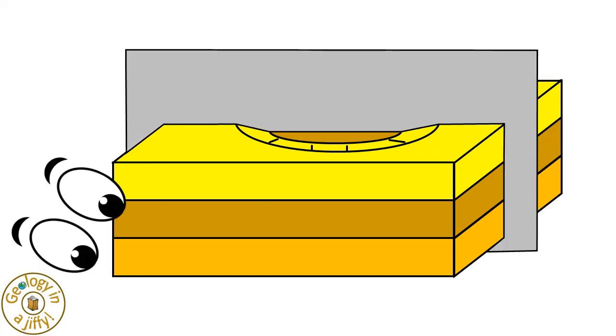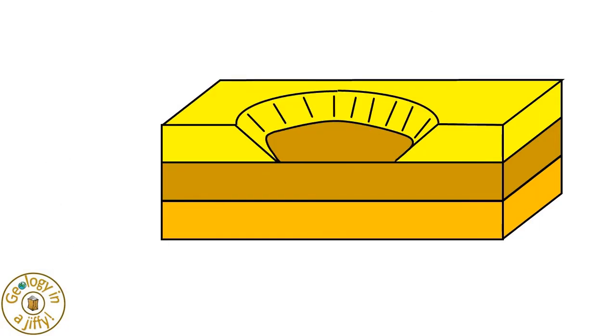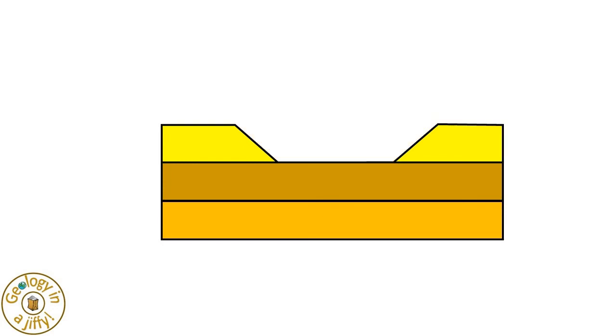If we look at our inlier in cross sections from the side, we will see this. The parallel layers, with the inlier being exposed by a hole through the younger, overlying layer.